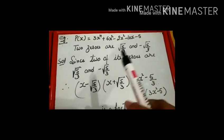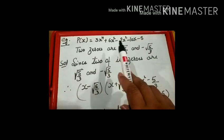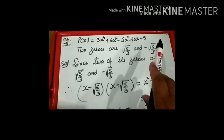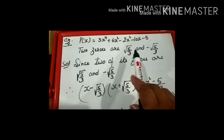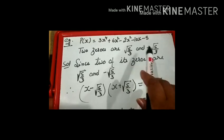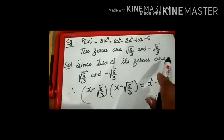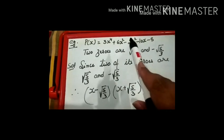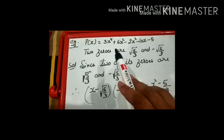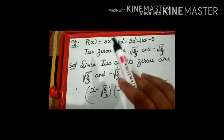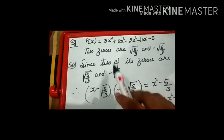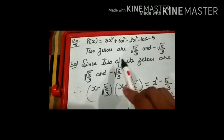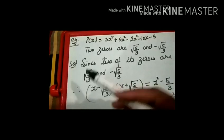Let us take an example. P(x) = 3x⁴ + 6x² - 2x² - 10x - 5, and two of its zeros are √(5/3) and -√(5/3). Note that a polynomial's number of zeros equals its highest degree. The highest power here is 4, so there are 4 total zeros. Two are given; we need to find the remaining two.